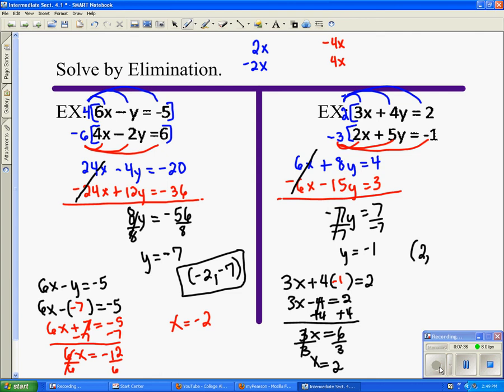I write it as an ordered pair and I'm careful to put my order, my x and y in the correct order. So this is one solution. They cross at the point 2, negative 1. It's consistent and independent.